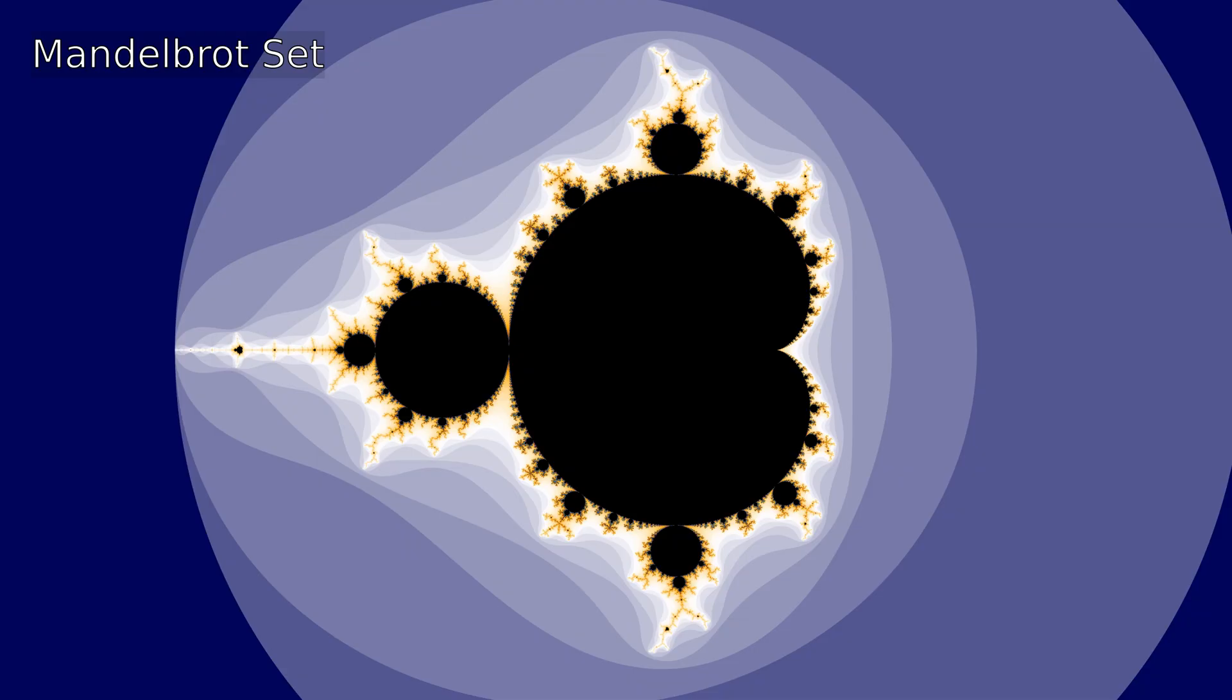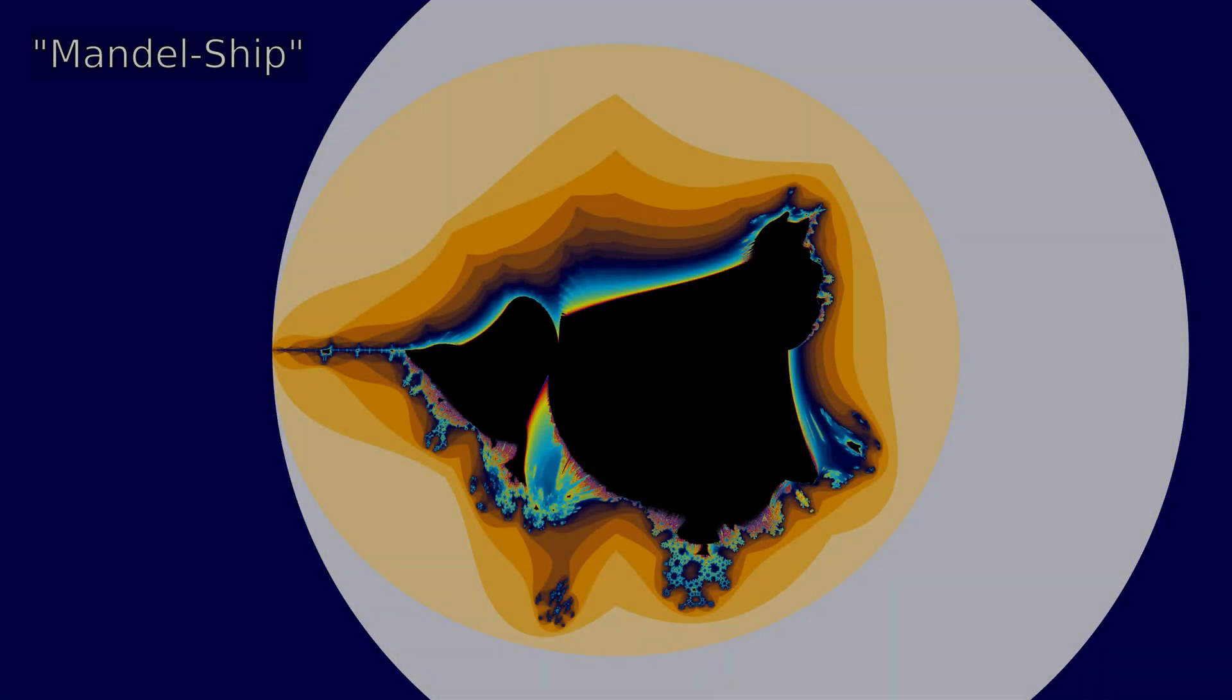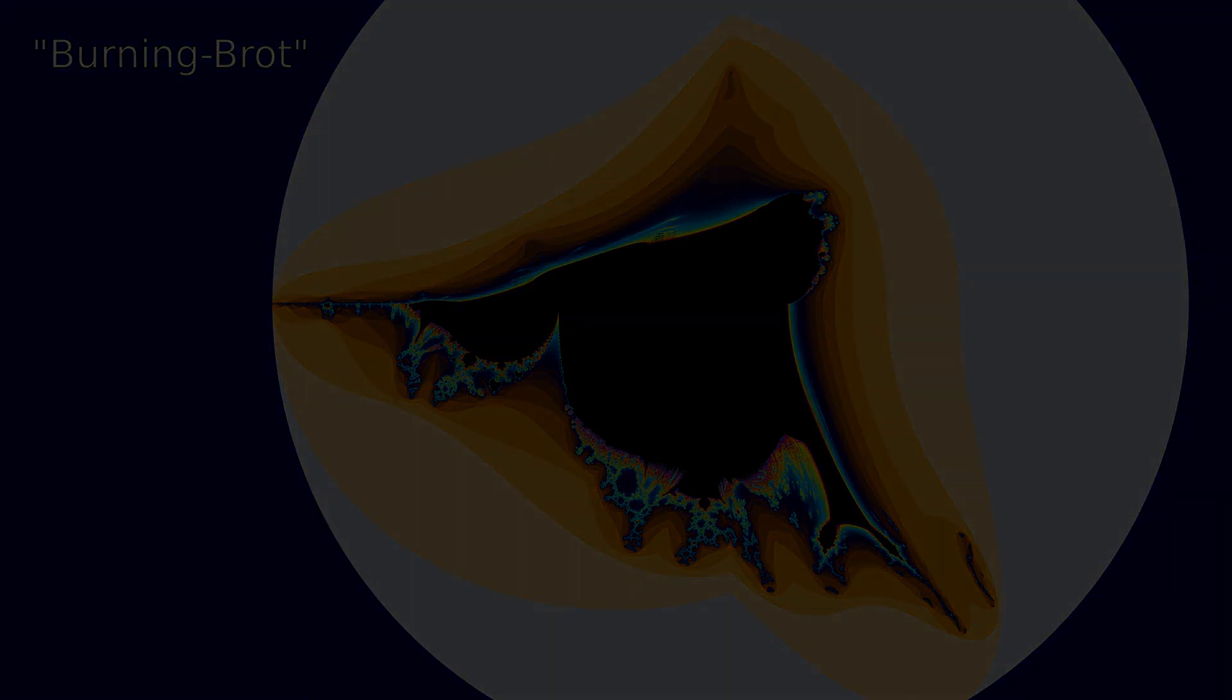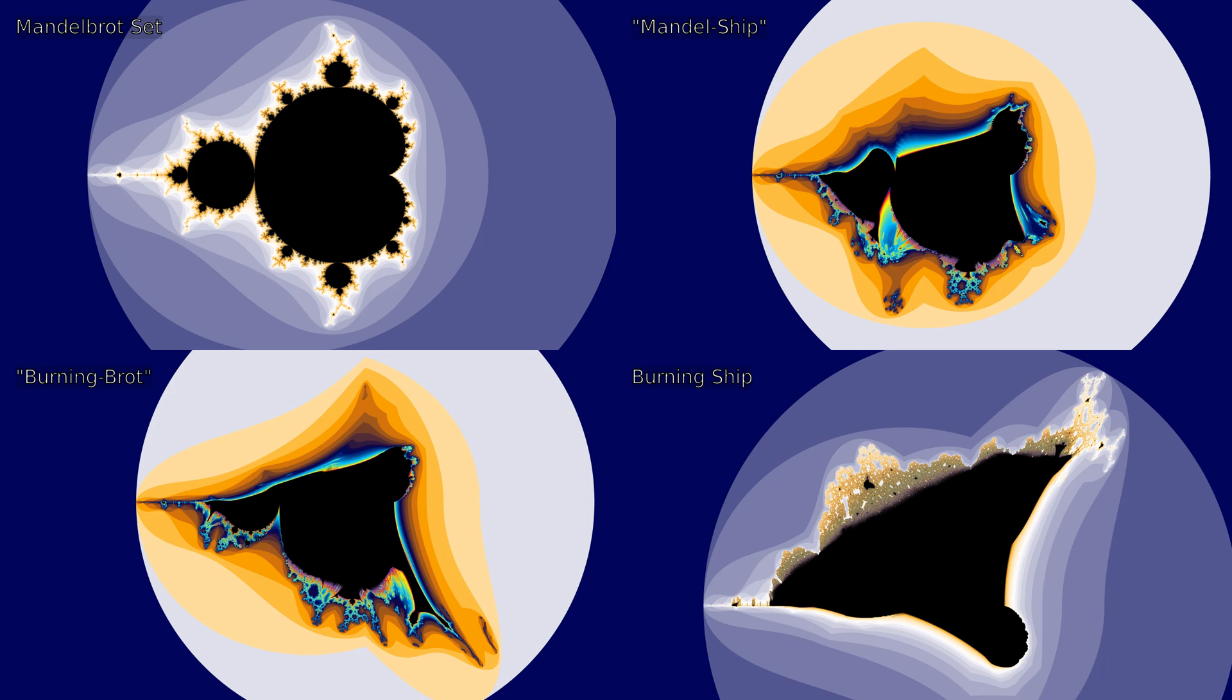Now it's getting interesting. The following ones were created by mixing two fractals into each other. First using the formulas one way or the other way around. This is the Mandelbrot and burning ship combinations. And here you can see their relation to each other.